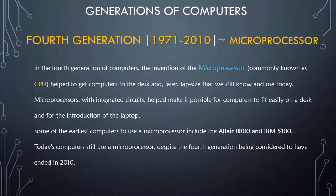The period of the fourth generation of computers was from 1971 to 2010. In the fourth generation, the invention of microprocessors — commonly known as the CPU — helped get computers to the desk and later laptop size that we still know and use today. Microprocessors with integrated circuits made it possible for computers to fit easily on a desk and enabled the introduction of the laptop.